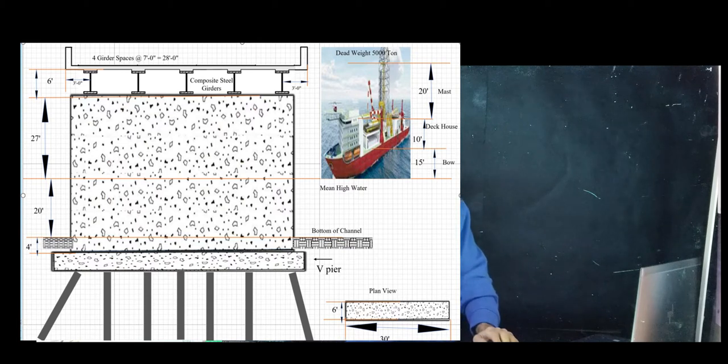Also, the pier is not protected against any vessel collision. It's just a square pier. As you can see from the drawing, the median mean high water is about 20 feet above the bottom of the channel.